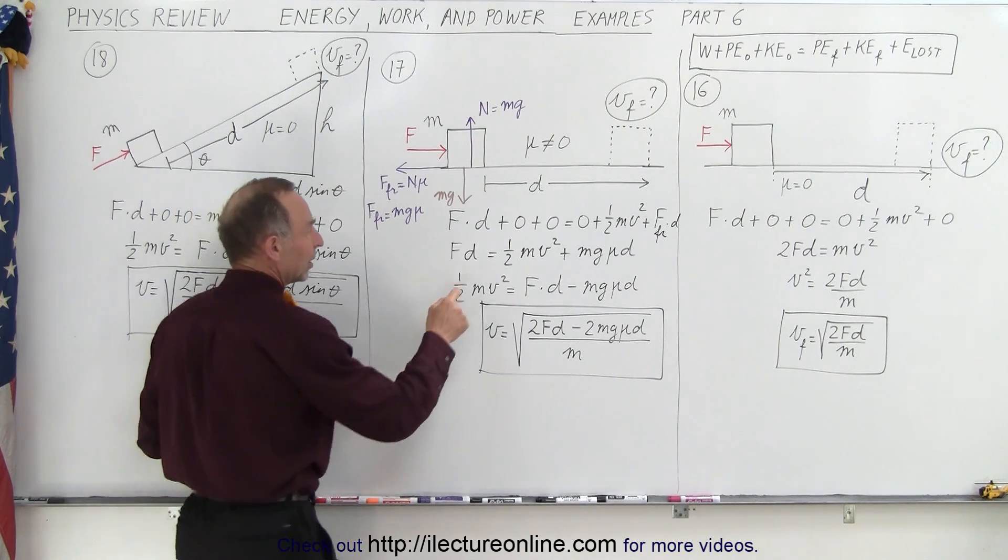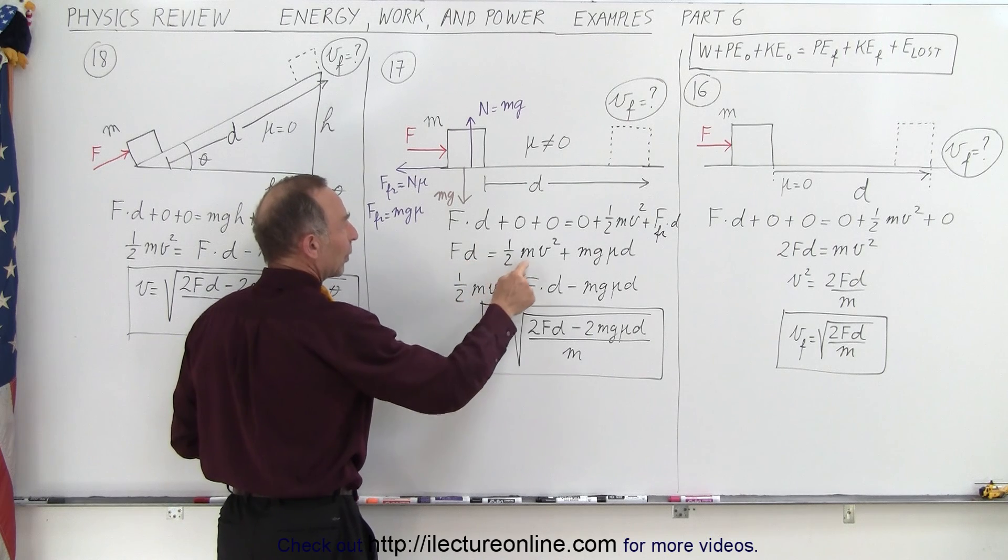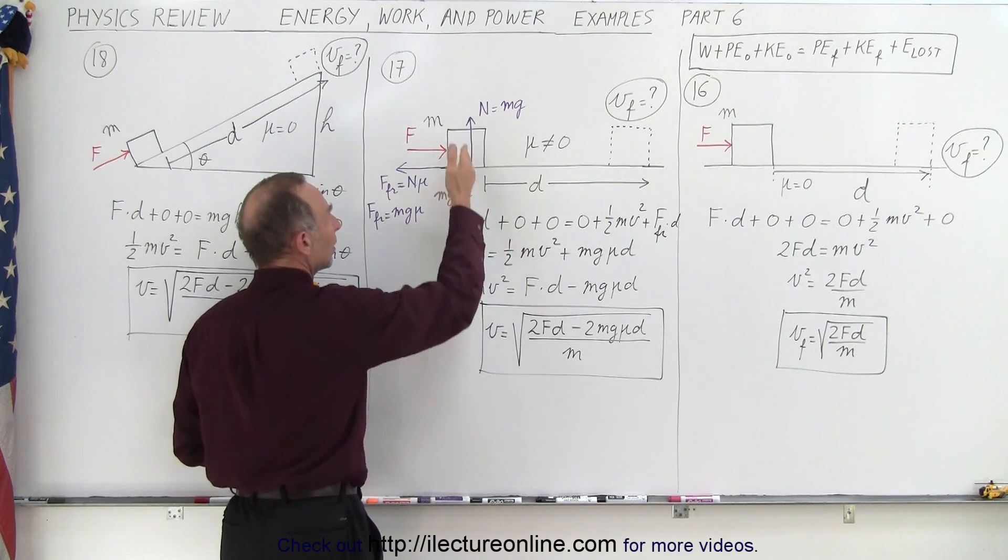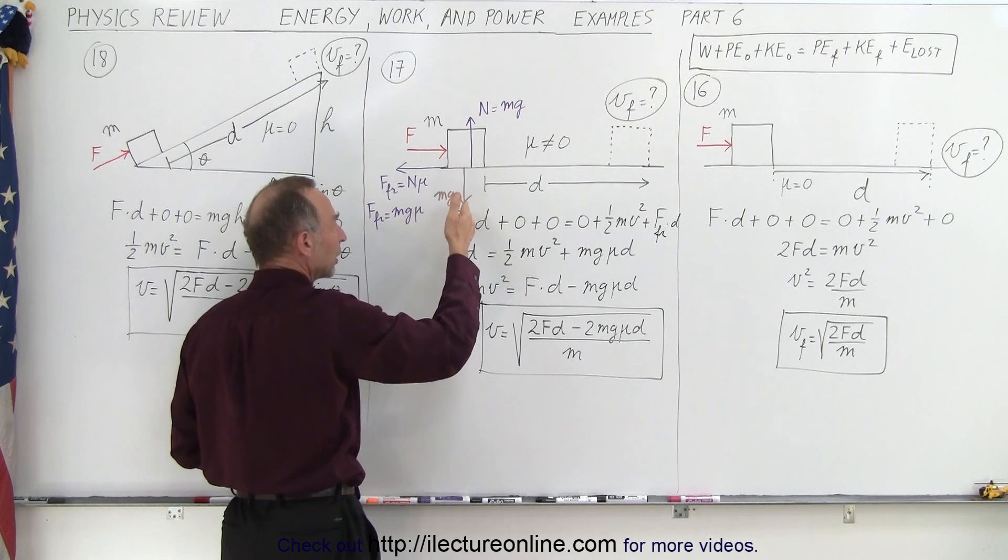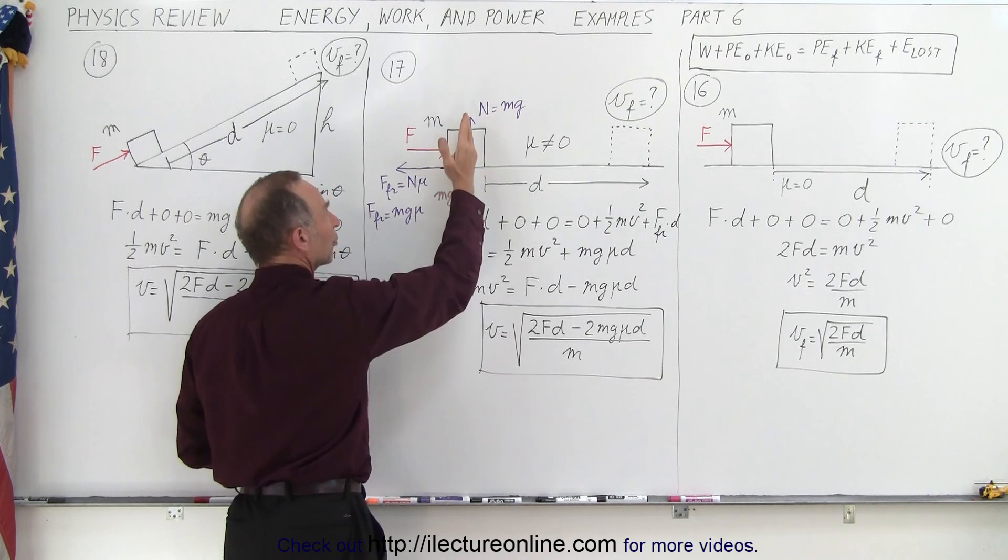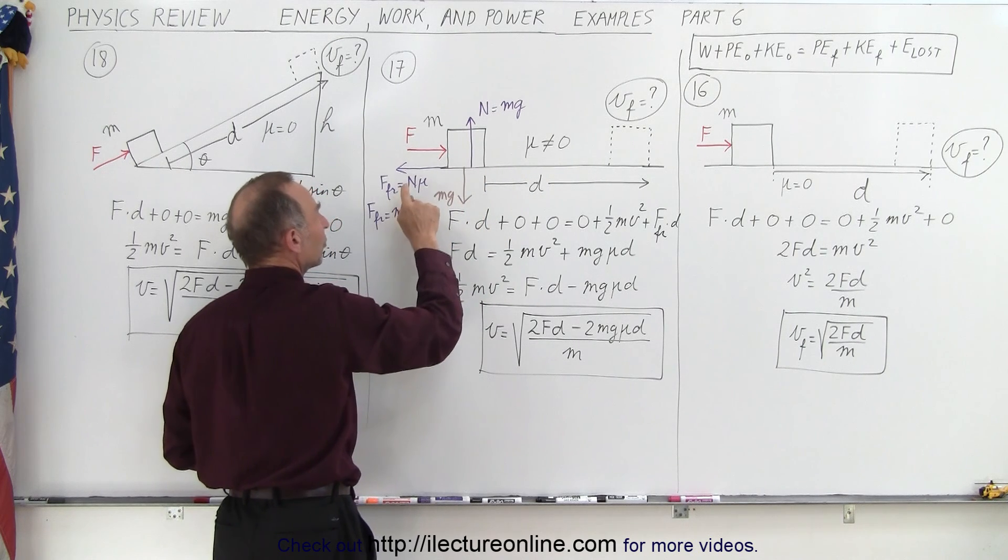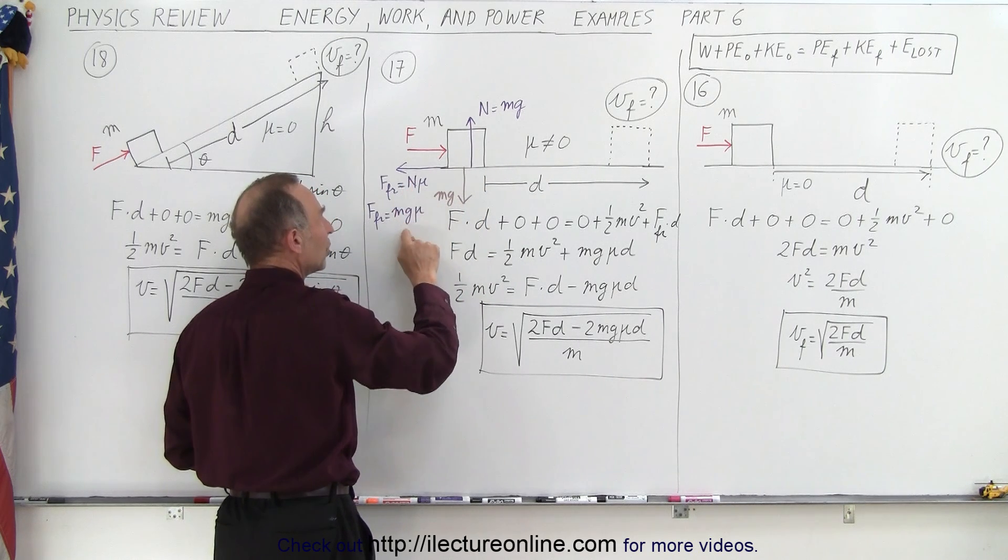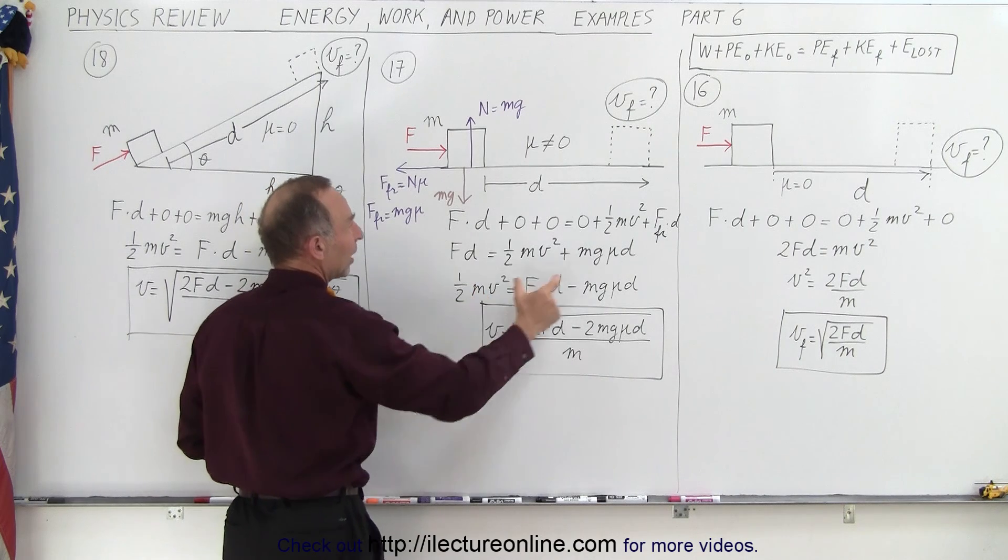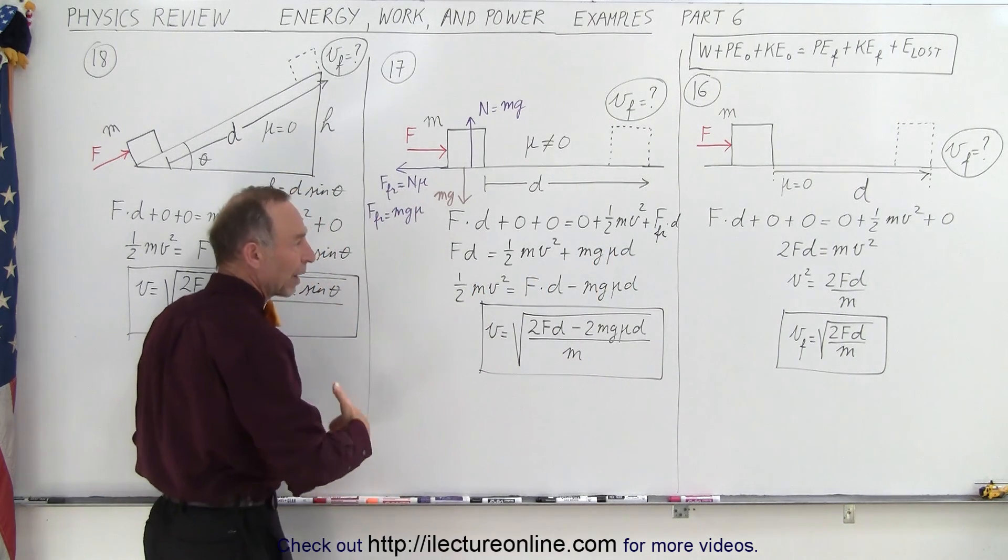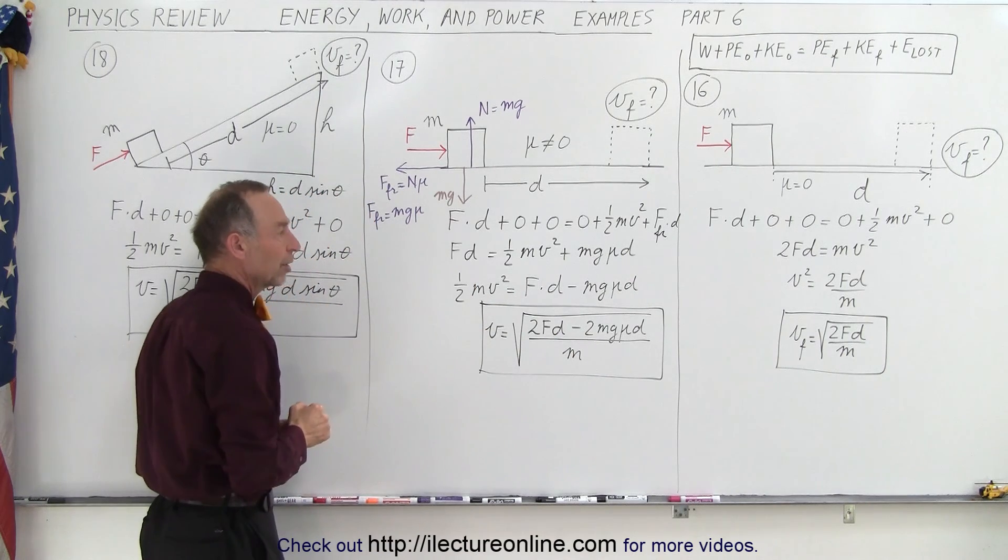And so now what we have is F times d equals one half mv squared plus—now the friction force is obtained by noticing we have the weight pulling down, we have the normal force of the surface pushing back up which is equal to the weight, and then the friction force is defined as the normal force, mg, times mu. So in this case, the friction force is mg mu times the distance traveled. We have to add that on the right side of the equation.